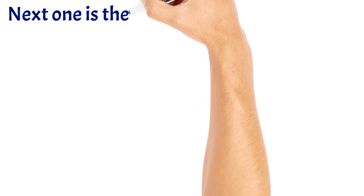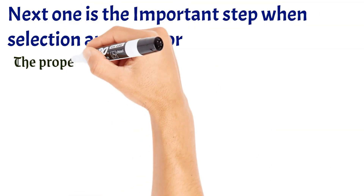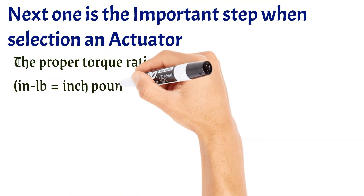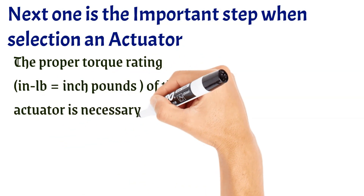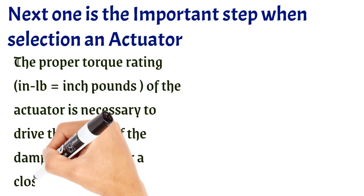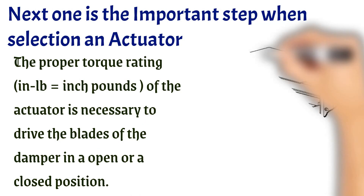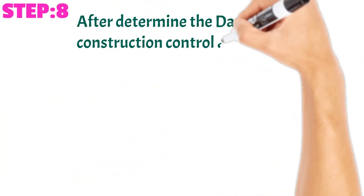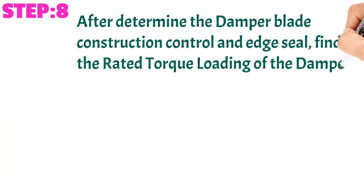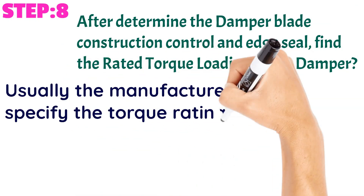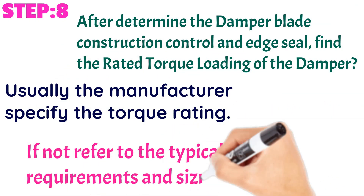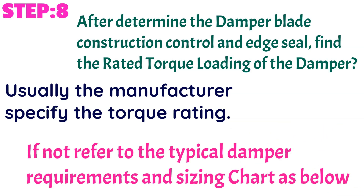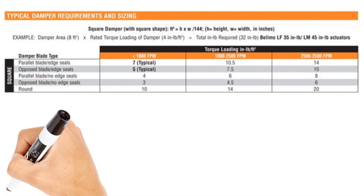The next important step when selecting an actuator is the proper torque rating of the actuator, which is necessary to drive the blades of the damper in an open or closed position. Step number eight: After determining the damper blade construction and edge seal, find the rated torque loading of the damper. Usually the manufacturer specifies the torque rating. If not, refer to the typical damper requirements and sizing chart below.